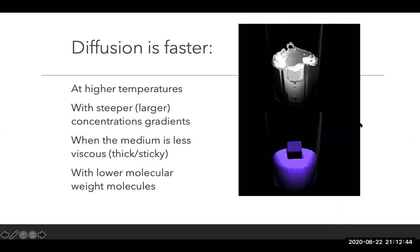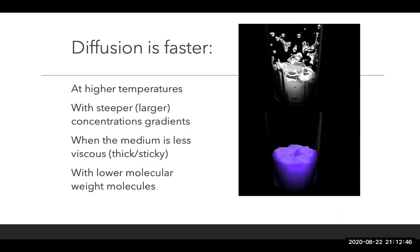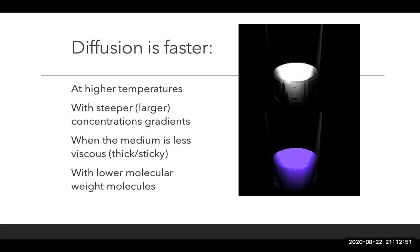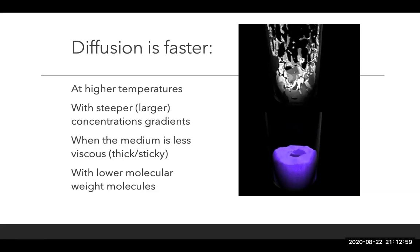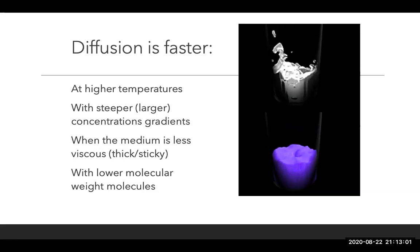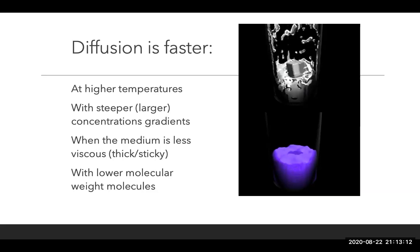Diffusion is faster — and you should know this, as it will be part of your lab procedure and some of the lab questions. Diffusion is always faster at higher temperatures, so higher temperatures cause molecules through kinetic energy to move more quickly and bounce off each other, spreading out more quickly. It's also faster at steeper or larger concentration gradients — meaning the greater the concentration gradient that exists, the faster diffusion will occur.